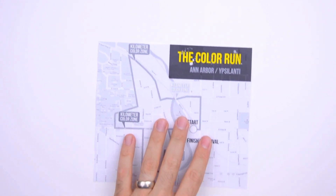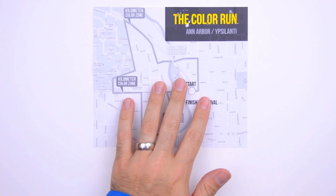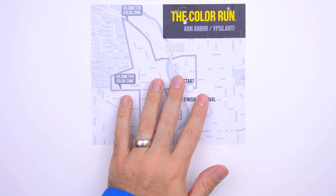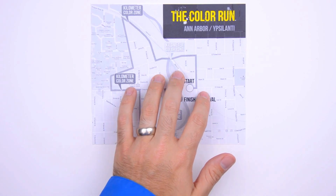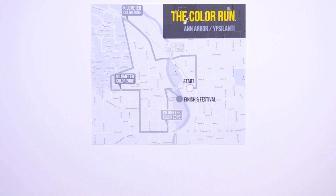This video will delineate speed and velocity by way of an example. In my hometown of Ypsilanti, as in many other cities in the States, a yearly running event is held, titled the Color Run.